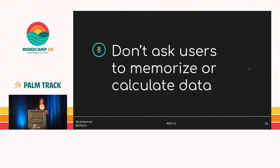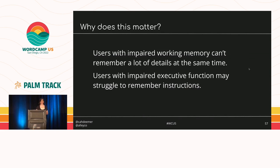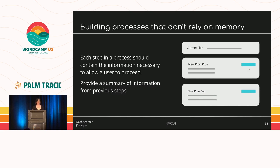Solution eight also addresses memory issues: don't ask users to memorize or calculate data. Many users have impaired working memory and can't remember a lot of details at the same time, and others with impaired executive function may not be able to remember instructions. You can help by not resetting a form when a user makes a mistake — clearing everything on an error is horrible. Also ensure that each step in a process contains all the information the user needs to proceed. If a user needs to change their service plan, they shouldn't have to remember their current plan's name; display it along with relevant details like cost, expiration date, and benefits.